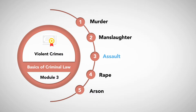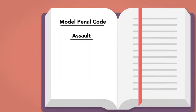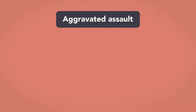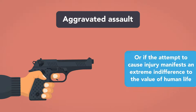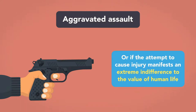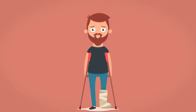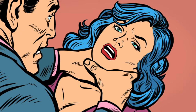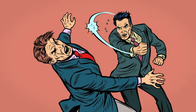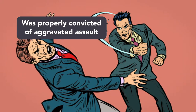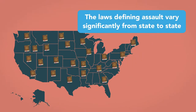Assault. The Model Penal Code defines assault as attempting to cause physical injury to another, or to put another in fear of imminent serious injury to his body. The assault is aggravated if a deadly weapon is used, or if the attempt to cause injury manifests an extreme indifference to the value of human life, and is done purposefully, knowingly, or recklessly. It may also be considered aggravated if serious injury results. A person who choked his wife and struck in the face and in the chest a neighbor who tried to intervene was properly convicted of aggravated assault, among other charges. The laws defining assault vary significantly from state to state.